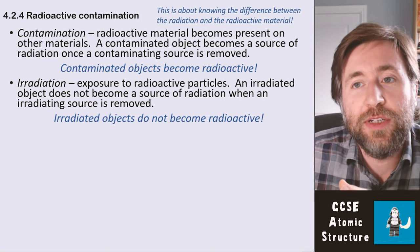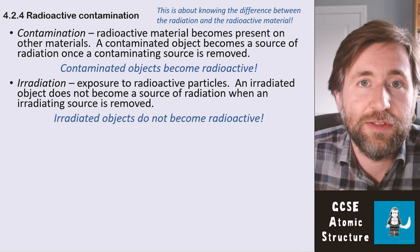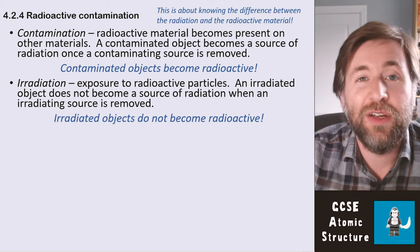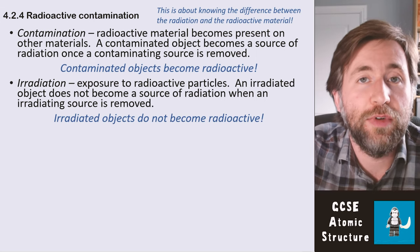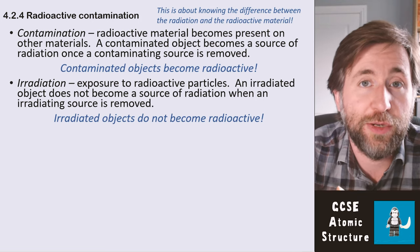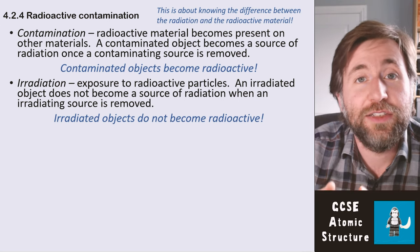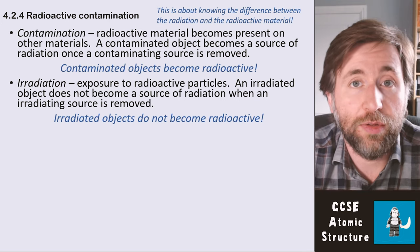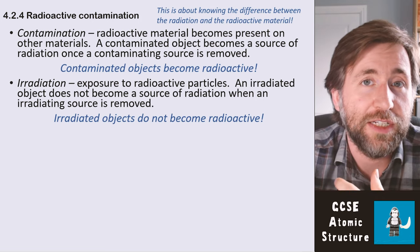This is all about knowing the difference between radiation and the radioactive material itself. A radioactive isotope gives out radiation. Radiation itself doesn't give out any more radiation — so an alpha, a beta, or a gamma doesn't go on to give out more radioactive particles. It doesn't make the things it hits radioactive; it just does one ionization and then it's gone. Whereas a radioactive isotope continues to keep giving out radiations.